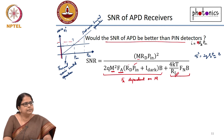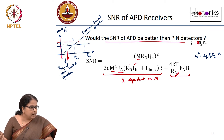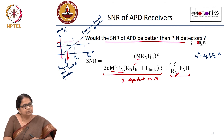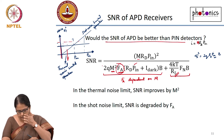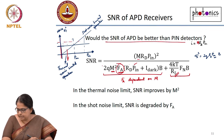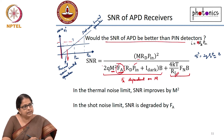Would the SNR of an APD be better than a PIN? In the thermal-noise-limited regime, the SNR improves by M² — definitely better. But in the shot-noise-limited regime, the M² factors cancel out and you are left with an extra F_A in the denominator. Since F_A is a noise figure greater than one, the SNR actually degrades. So in the thermal noise limit, SNR improves by M²; in the shot noise limit, SNR is degraded by F_A. You must be careful using APD — in the shot-noise-limited regime, it actually hurts SNR.